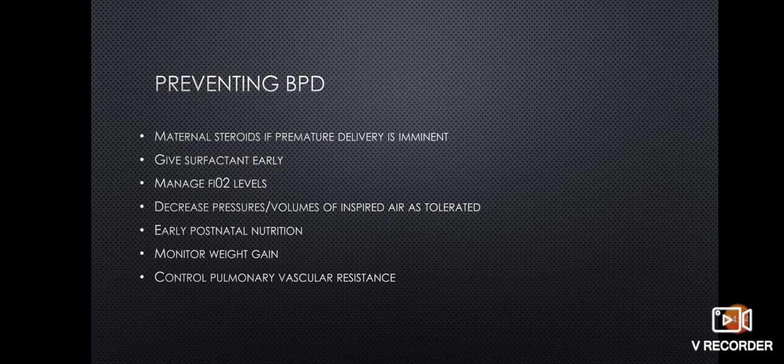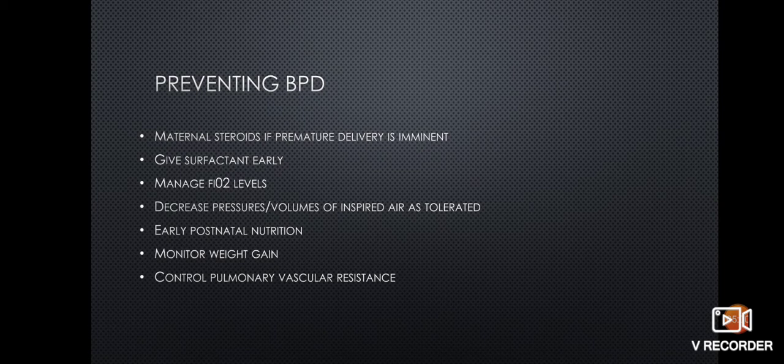Early administration of artificial surfactant decreases the need for prolonged mechanical ventilation. Allowing the premature infant to maintain a lower saturation decreases the need for high oxygen concentrations, which in turn decreases free oxygen radicals and alleviates chemical damage to the lung tissue — this is why setting pulse ox targets on the patient monitor is so important. The use of oscillating ventilators and placing infants on nasal cannula as quickly as possible also help reduce barotrauma, though all of these interventions are dependent on the infant's tolerance.